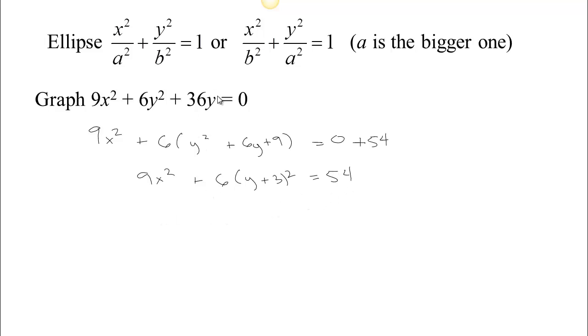To get it into the standard form, we'd need to divide by 54 so that we have 1 on the right-hand side. So we have 9x squared over 54 plus 6 times y plus 3 squared over 54 equals 1. 9 goes into 54 6 times. 6 goes into 54 9 times. So we have x squared over 6 plus y plus 3 squared over 9 equals 1.